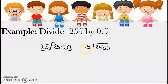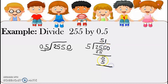So 2550 divided by 5. First, 2550 divided by 5 is 5. 5 times 5 is 25. And then bring down 5. Divided by 5 is 1. Times 5 is 5. 5 minus 5 is 0. Then bring down 0. 0 divided by 5 is 0. 0 times 5 is 0. So your answer is 510.